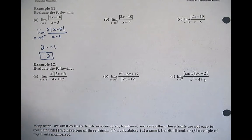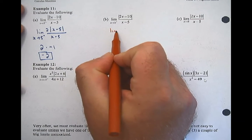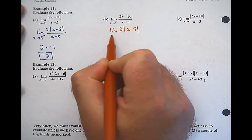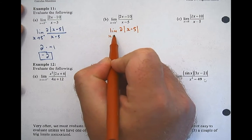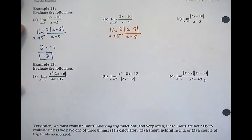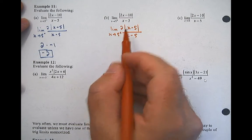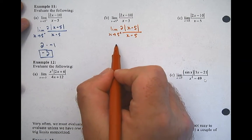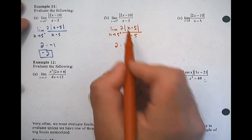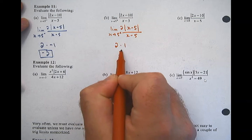The limit of 2·absolute(x−5) over (x−5) as x approaches 5 from the right — this is Jumpman again. This time coming from the right-hand side, the positive side. So this is 2 times positive 1, and I end up with positive 2.